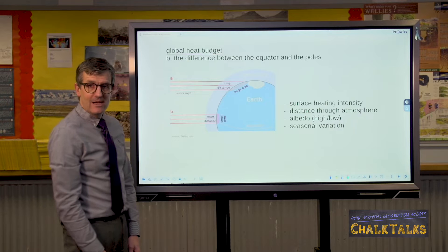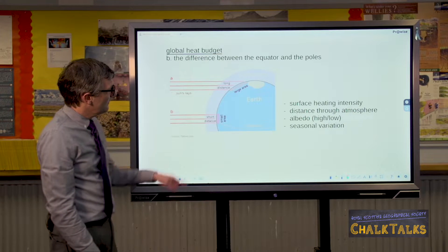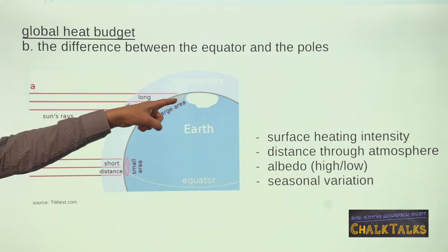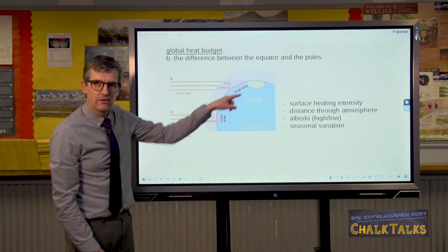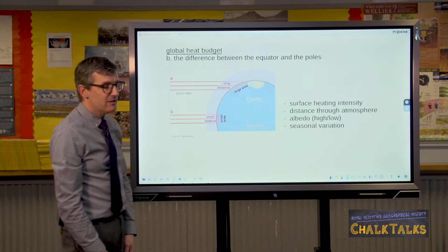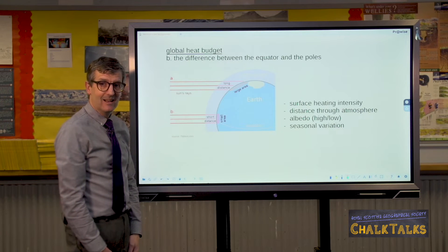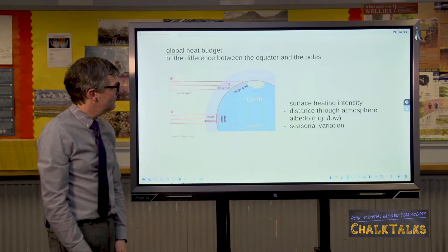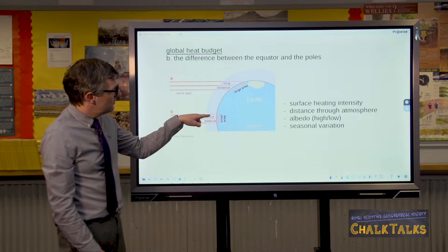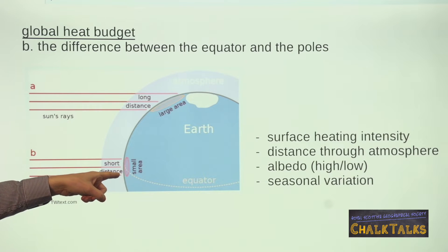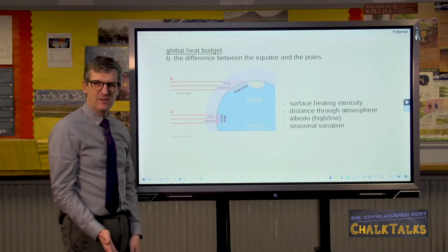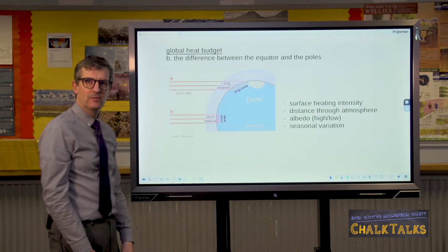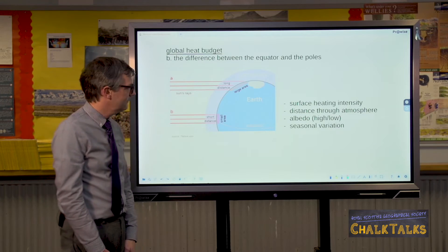The albedo has an effect here as well. At the poles, where we have a lot of white surfaces because of the snow and ice, the albedo is high and that means it's reflecting more energy. Towards the equator, the albedo is lower, absorbing more of the sun's energy, and that's because it's mainly greens and blues because of the rainforest and the ocean.